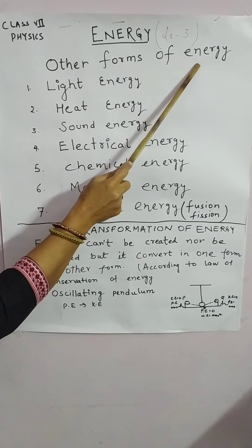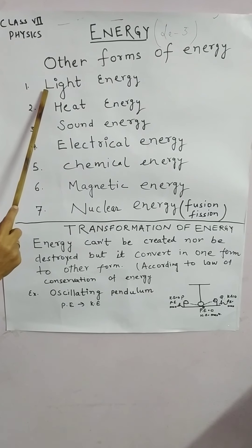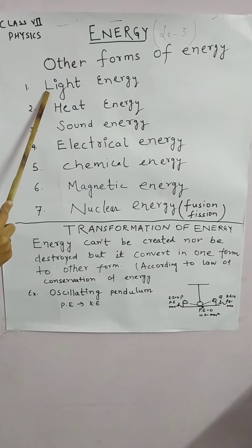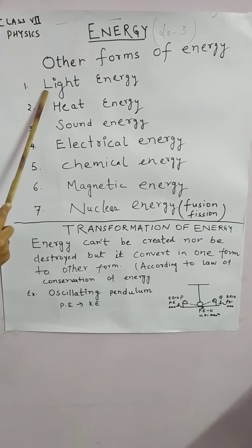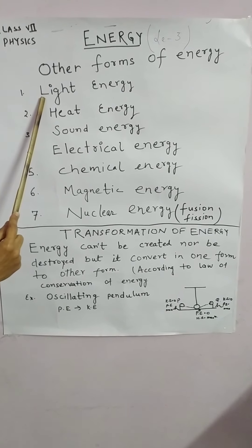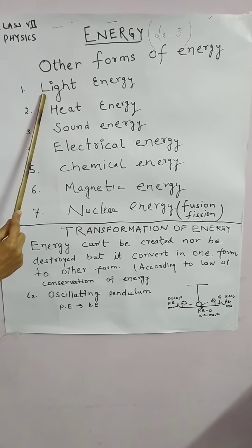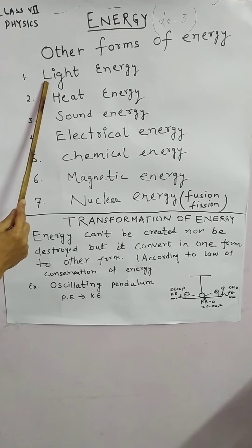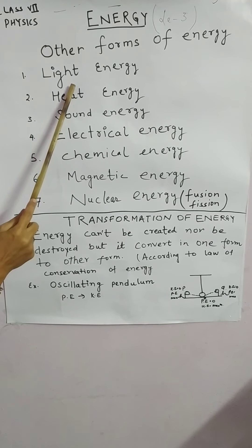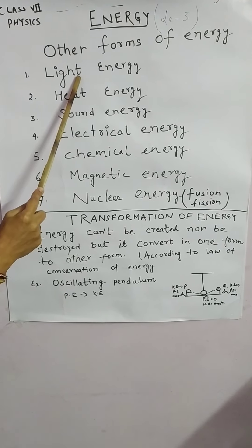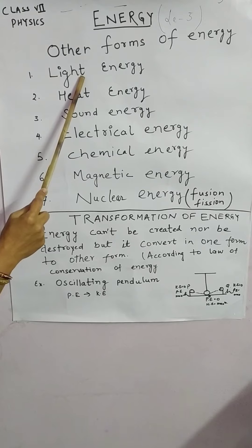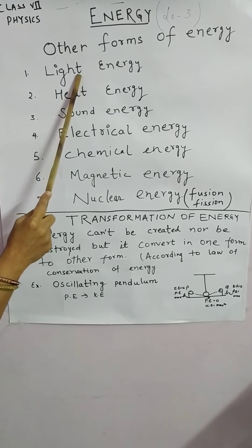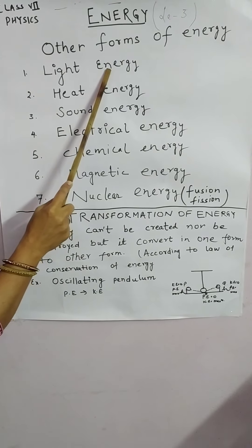The other forms of energy. First, light energy. Light is a form of energy that provides a sensation of vision in our eyes. An example of light energy: plants and trees use sunlight to prepare food by the process of photosynthesis.